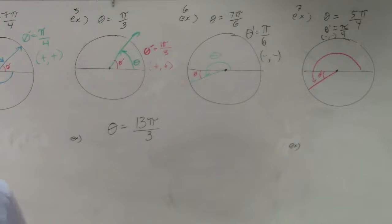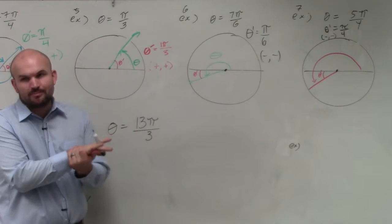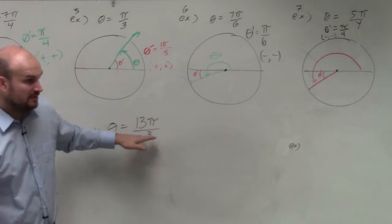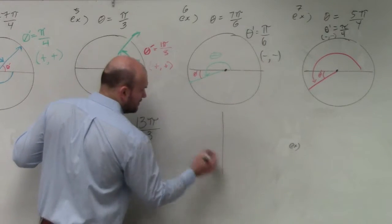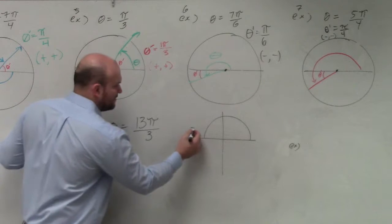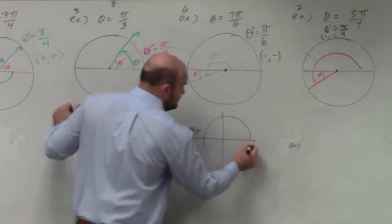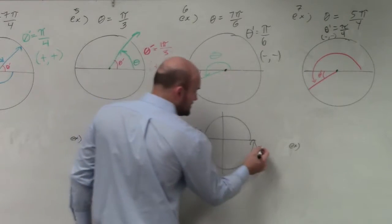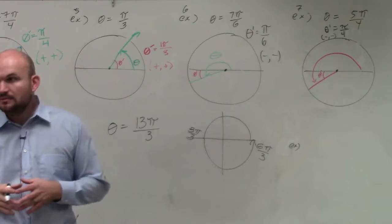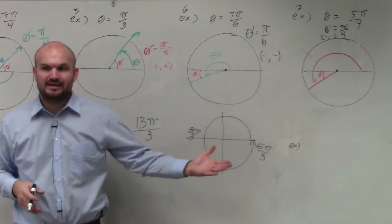The main important thing we want to do is break this down using our period as our aid. We know that halfway around the circle is pi, which is the same equivalent as 3 pi over 3. All the way around the circle would be 2 pi, which is equivalent to 6 pi over 3. So basically what I'm saying is 6 pi over 3 is redundant.